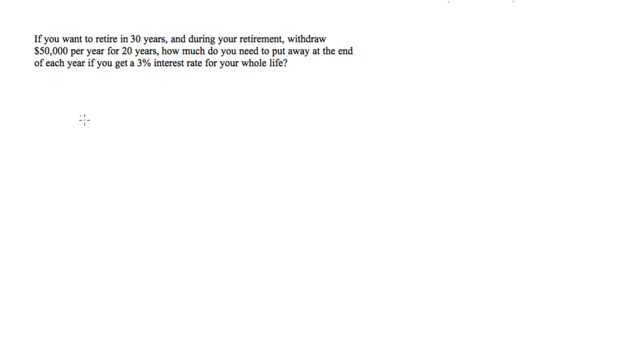So we will use the present value of an annuity formula, which is PV = A times [1 - (1+i)^-n] all over i.